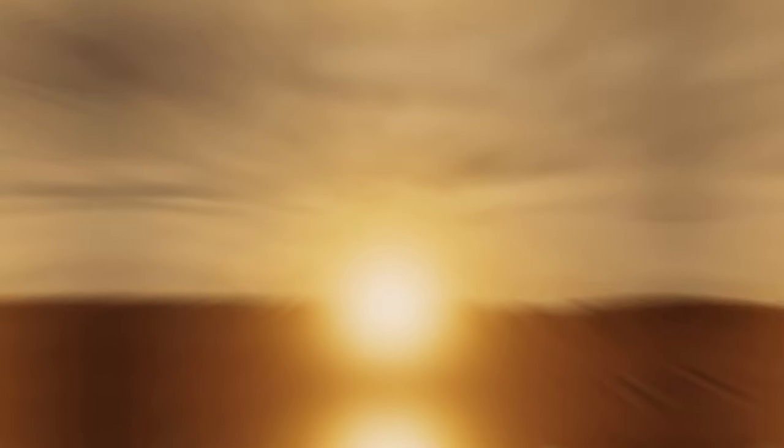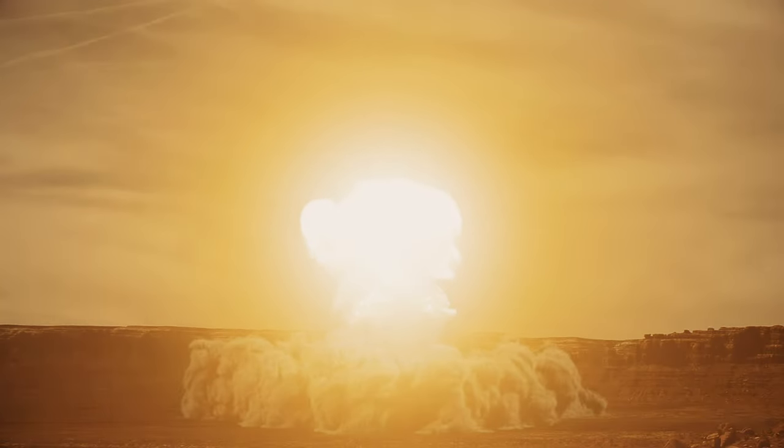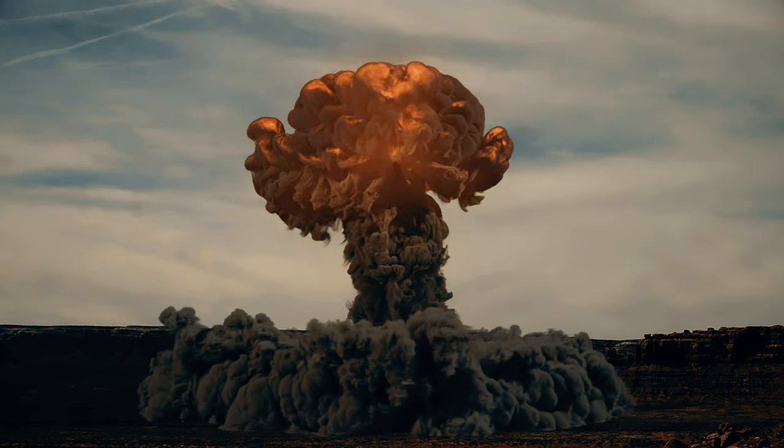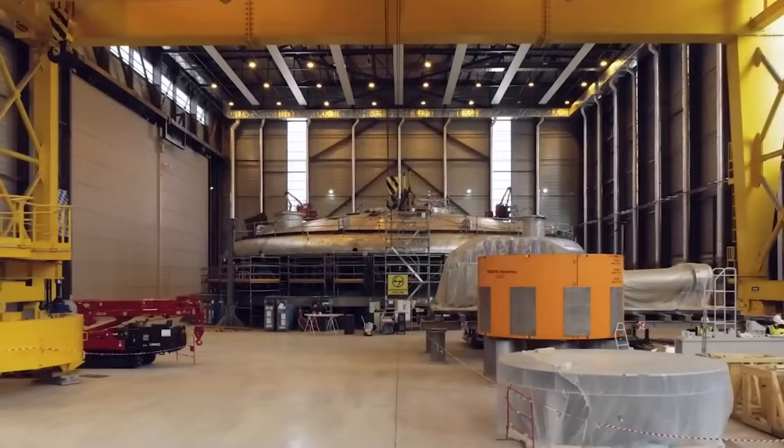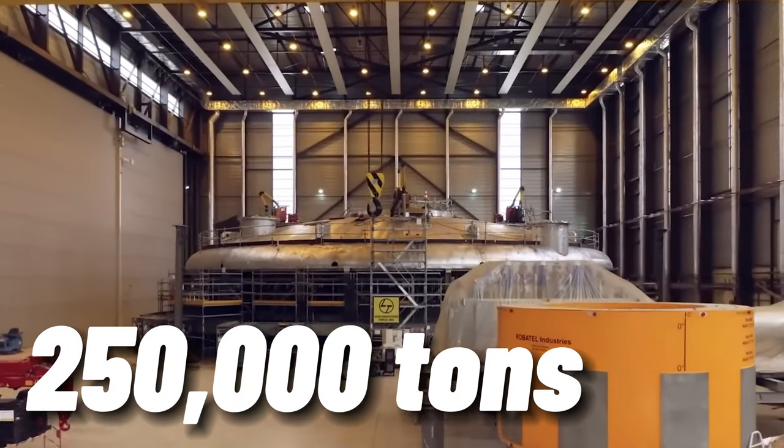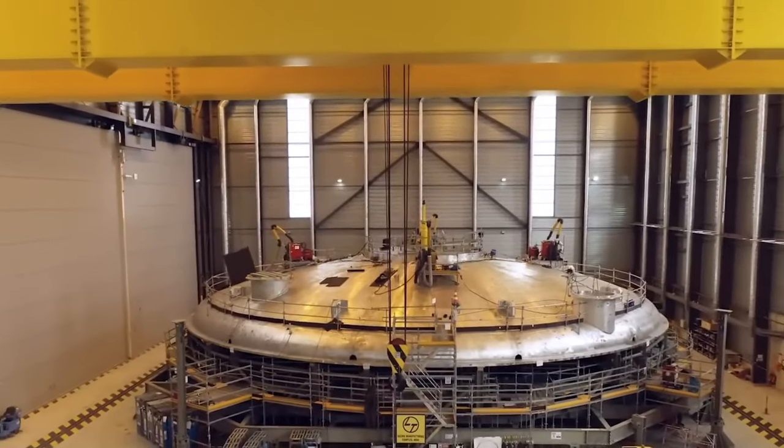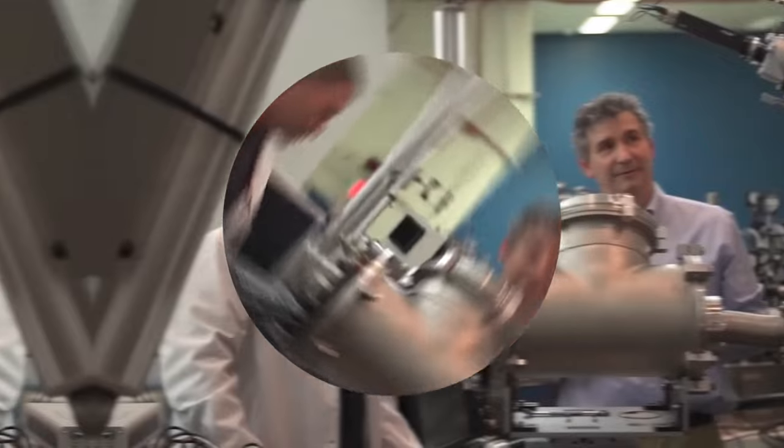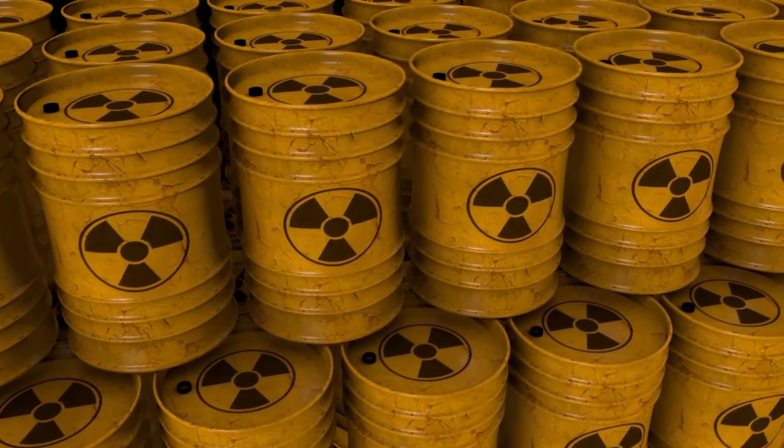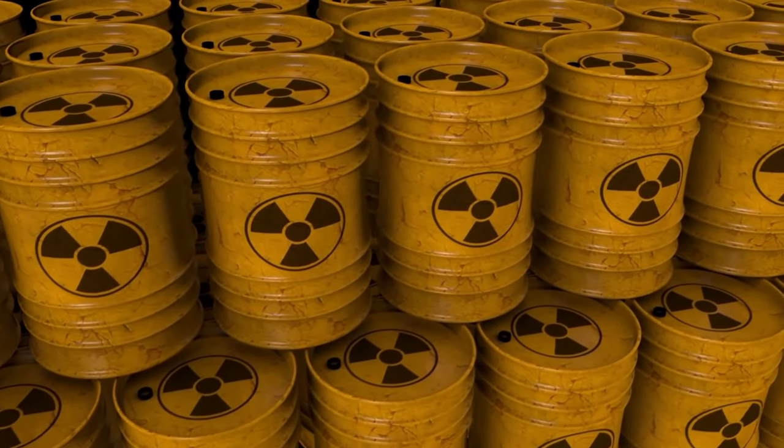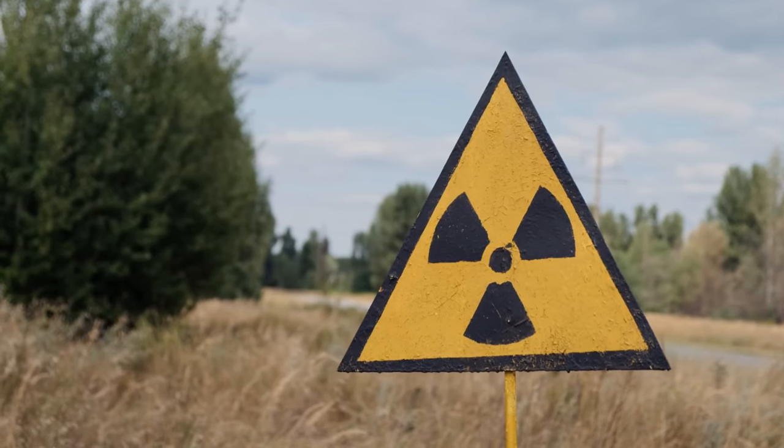Nuclear waste is one of the biggest problems of nuclear energy. According to the International Atomic Energy Agency, there are about 250,000 tons of spent nuclear fuel in the world, and this number is expected to grow by 2% every year. Spent nuclear fuel contains about 95% unused uranium, 3% fission products, and 1% actinides. The fission products are the most radioactive and dangerous, but they decay relatively fast, losing half of their radioactivity in about 30 years.